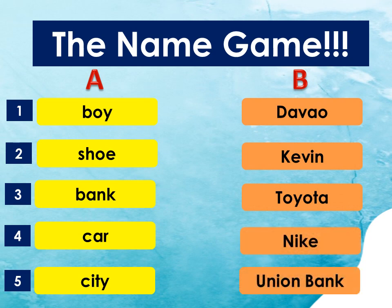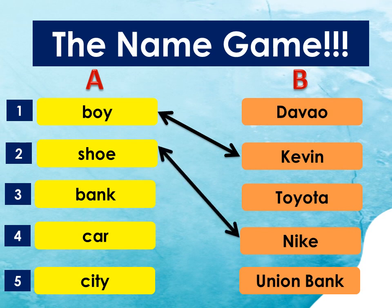Let us try to match column A with column B. Number 1: Which word in column B is the name of a boy? That's correct! It's Kevin! Number 2: Which word in column B is the name of a shoe? That's correct! It's Nike!